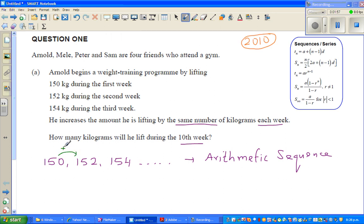The formula for an arithmetic sequence, if you want to find the nth term, is: tn equals a plus (n minus 1) times d. Where a is your first term, which is 150, and d is the common difference, which is 2. The question asks you to find t10.